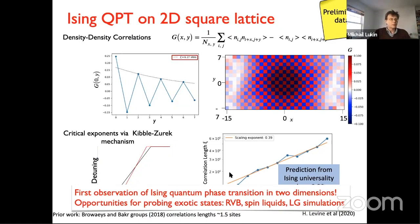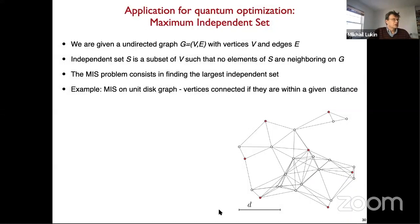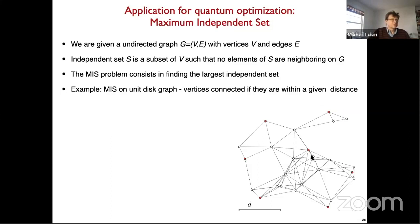There are many other opportunities for probing exotic states. I want to point out the connection to quantum optimization. One paradigmatic optimization problem is the Maximum Independent Set problem: given a graph with vertices and edges, an independent set is a subset of vertices such that no two selected vertices are connected by an edge. The Maximum Independent Set problem consists of finding the largest such set — easy to formulate but very hard to solve.